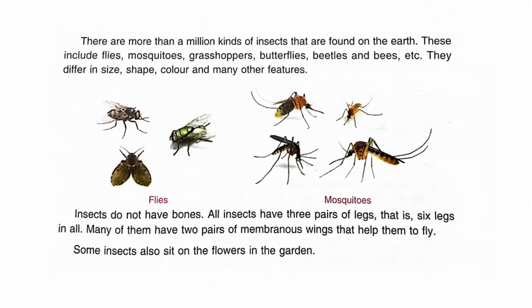These include flies, mosquitoes, grasshoppers, butterflies, beetles, and bees, etc. They differ in size, shape, colour, and many other features, as you have seen in the pictures.